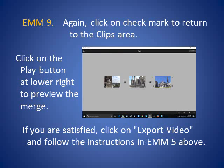Again, click on the check mark to return to the Clips area. Click on the Play button at the lower right to preview the merge. If you are satisfied, click on Export Video and follow the instructions in step EMM5 above.